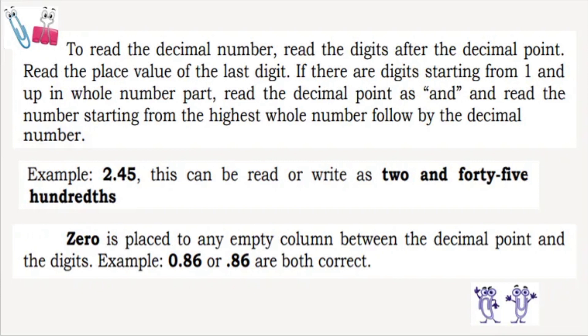For example, 2.45 can be read or written as 2 and 45 hundredths. Zero is placed in any empty column between the decimal point and the digits — for example, 0.86 is correct in either form.